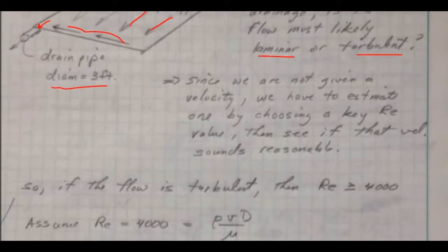So we're not given any velocity here, so we have to estimate one by choosing a key Reynolds number value and see if that velocity sounds reasonable.